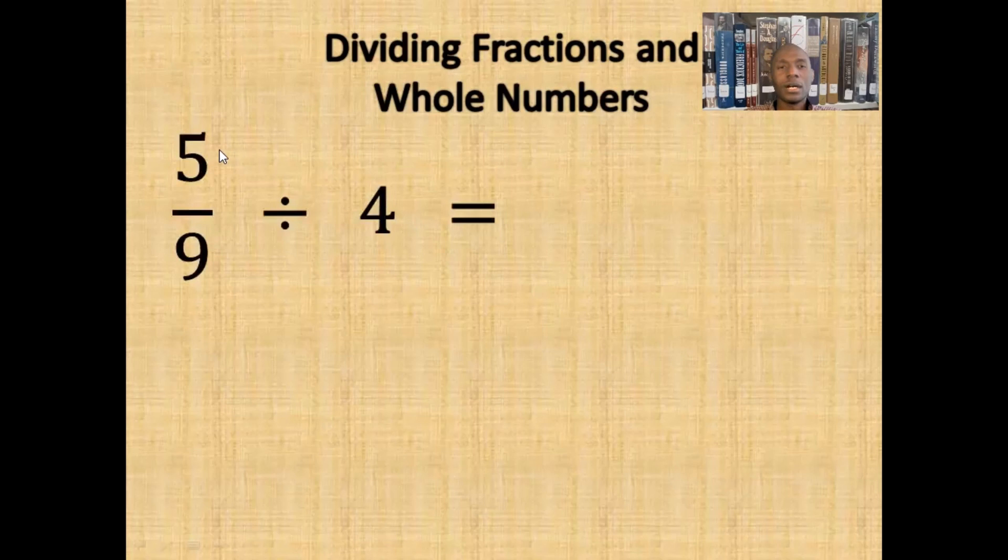Suppose we have 5 ninths divided by 4. To divide a fraction by a whole number, we would convert the whole number into a fraction by putting it over 1. Thus, we get 5 ninths divided by 4 wholes.